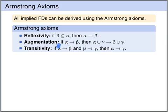Then we have augmentation. Augmentation allows us to add attributes to the left-hand side of an existing functional dependency. If we have a functional dependency alpha uniquely determines beta, then we can add a set of attributes gamma to both the left and the right. It is important to note that we add the same set gamma to both sides. Since gamma uniquely determines gamma, all attributes added on the right are uniquely determined by the left, making this a valid functional dependency.